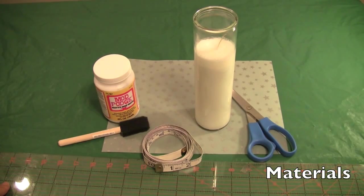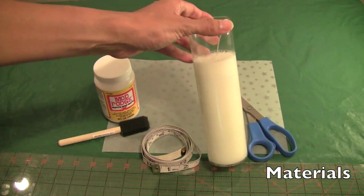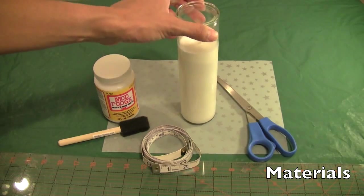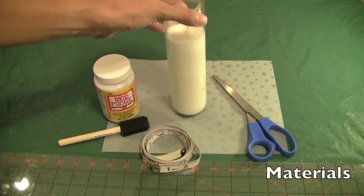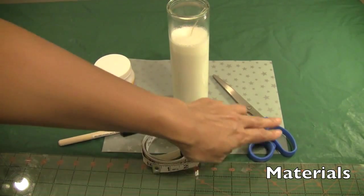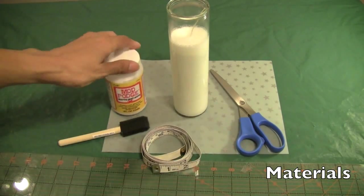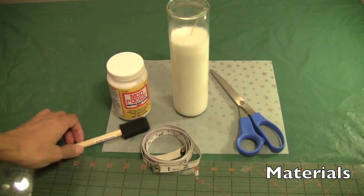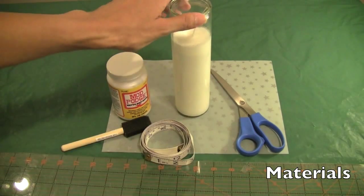The materials you'll need for this project are: a candle in a glass jar (this one came from the dollar store), a piece of vellum paper, scissors, Mod Podge mat with a foam brush, and something to measure your candle with.